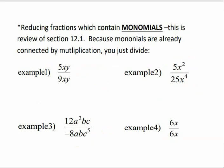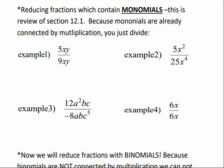Now, reducing monomials we've done before, but let's just refresh our memory and reduce these monomials. Here we have 5xy over 9xy. So remember, we look at the things that have the same bases, and these y's would cancel, and so would the x's. And if we could reduce the number part, we would, but we can't, so it would just be 5 over 9.